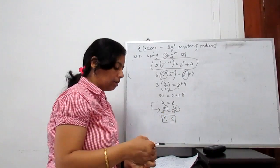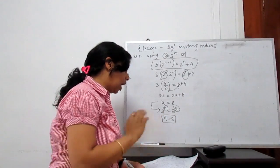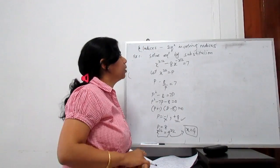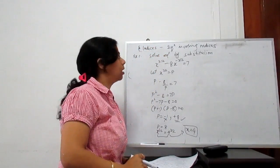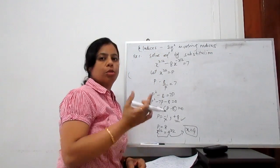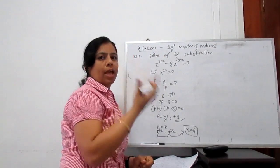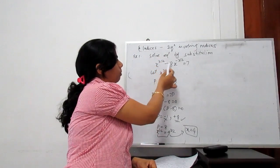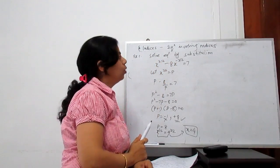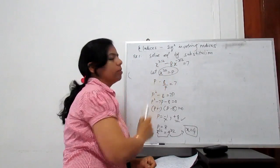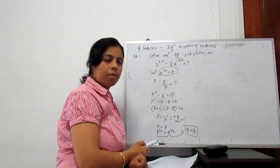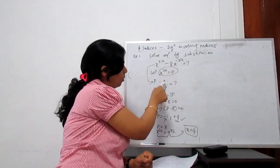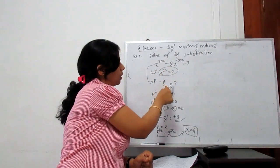Now another example: solve the equation by substitution method. The equation is x to the power 3 by 2 minus 8 times x to the power minus 3 by 2 equals 7. Let x to the power 3 by 2 equal to p. Then x to the power minus 3 by 2 is 1 over p, so the equation becomes p minus 8 over p equals 7.